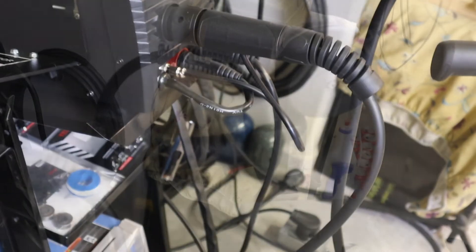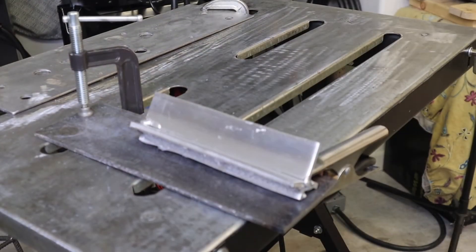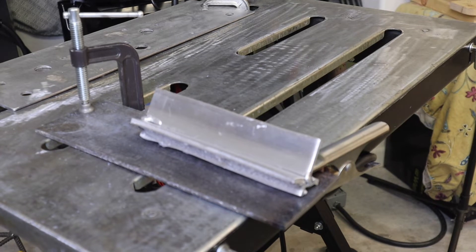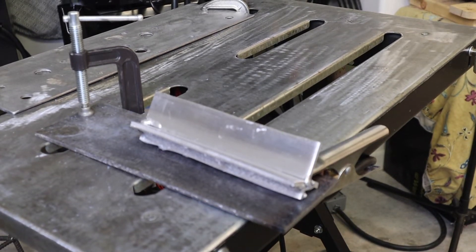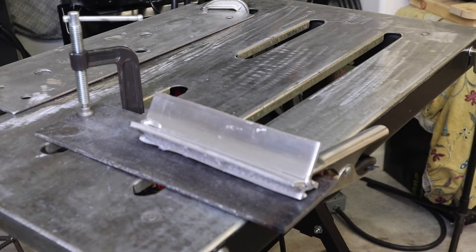I've got the YesWelder spool gun connected to the machine and we're going to run a test on this piece of quarter inch aluminum. This is a cold test, meaning I'm not going to preheat the metal.